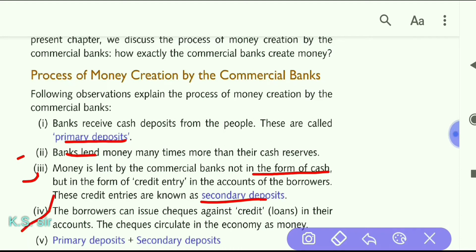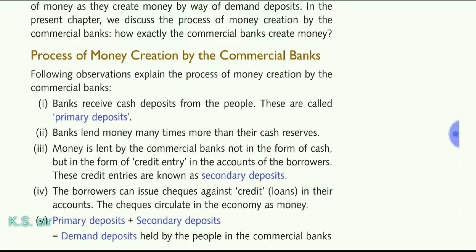Number four: the borrower can issue checks against the credit in their accounts. When the loan amount is deposited as a secondary deposit, the borrower can issue checks against it. These checks circulate in the economy as money — first the bank issued the loan check, then the borrower issued further checks. This circulation of checks throughout the economy is important — small MCQ questions can come from this.